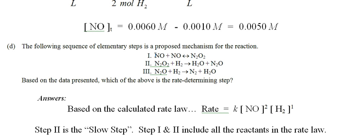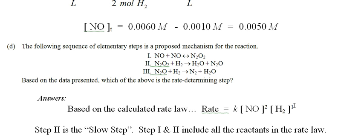Let's take a look. In the first step, we have NO plus NO — two NOs. Is there a hydrogen in that first step? Because we want to include all reactants up to and including the slow step. No — the first time we see hydrogen is in the second step. So we have NO, NO, and hydrogen. We already said N₂O₂ is an intermediate, so N₂O₂ would never appear in the rate law. Steps 1 and 2 together give us two NOs and one hydrogen, minus the intermediate N₂O₂ — that matches our rate law. So step 2 is the rate-determining step.